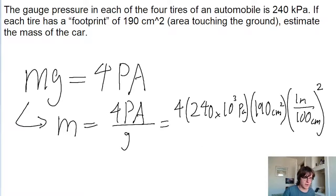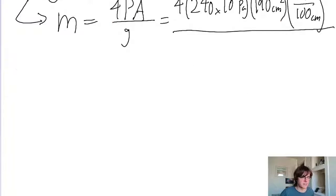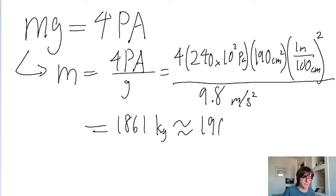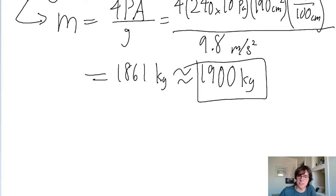And then this is all being divided by the gravitational acceleration of 9.8 meters per second squared. Put this into a calculator, and we find a mass of about 1861 kilograms, which can also be rounded to two significant figures of 1900 kilograms. And that is the answer to this problem.